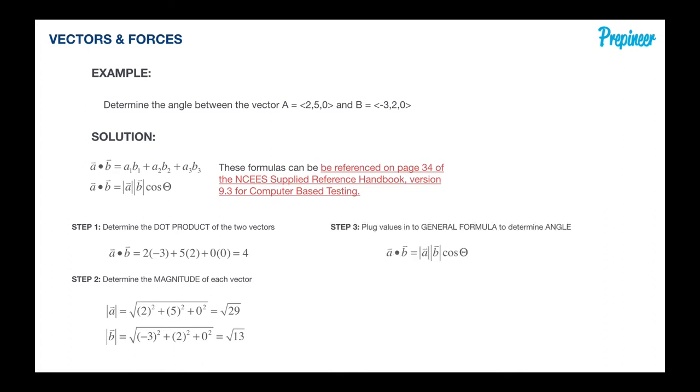All we need to do is plug in our values to the general formula to determine that angle. And there's our values that we just previously computed in step 1 and 2. Rearrange that for theta. And we find that the angle between these two vectors is 78.11 degrees.